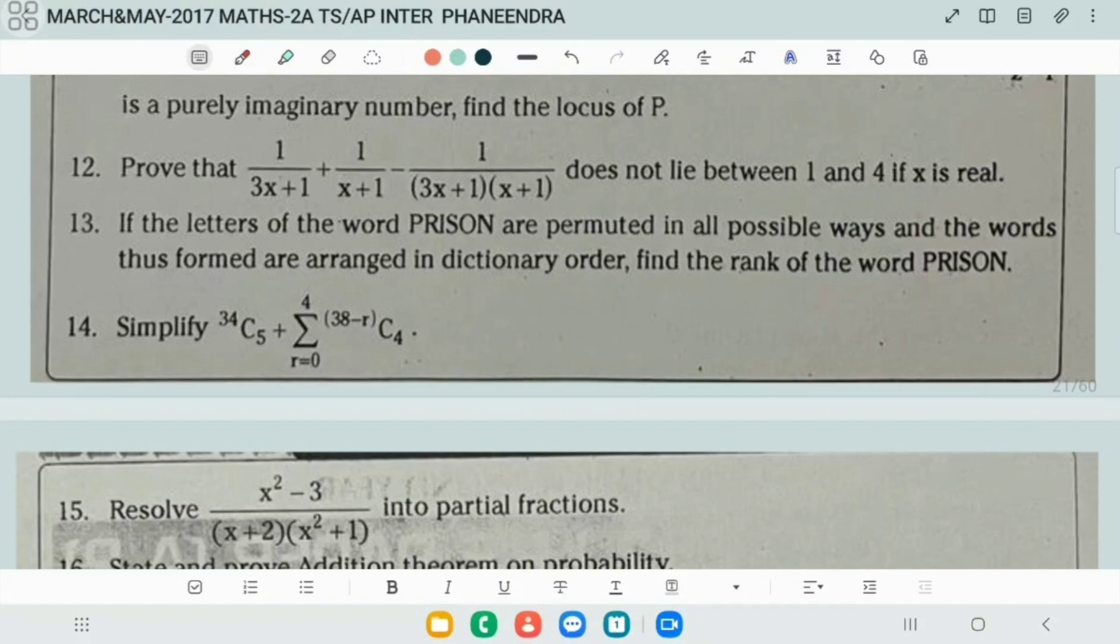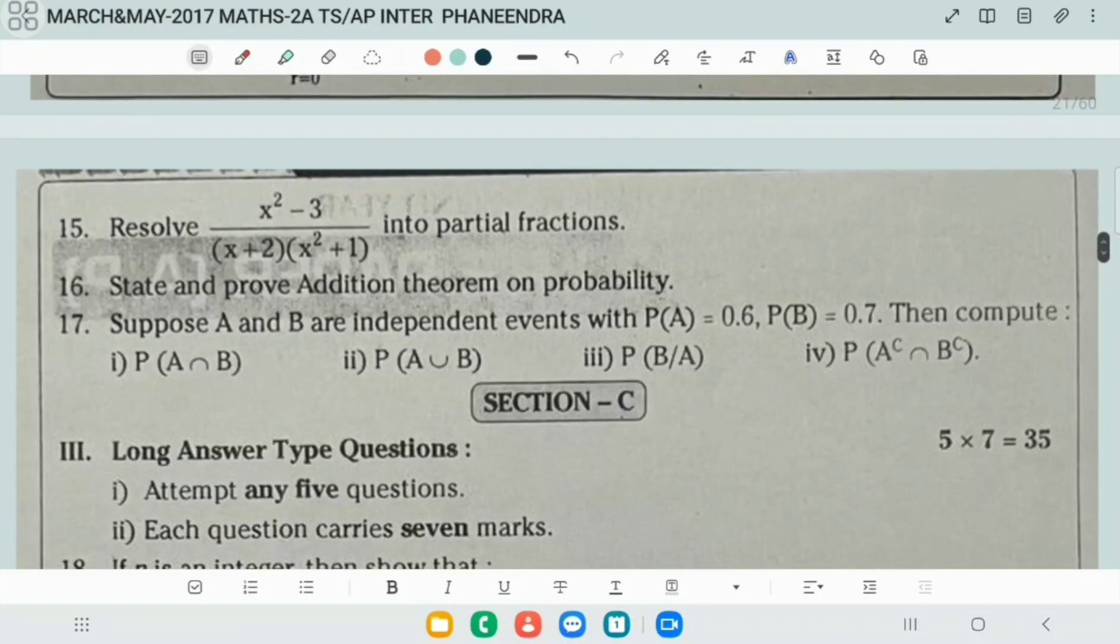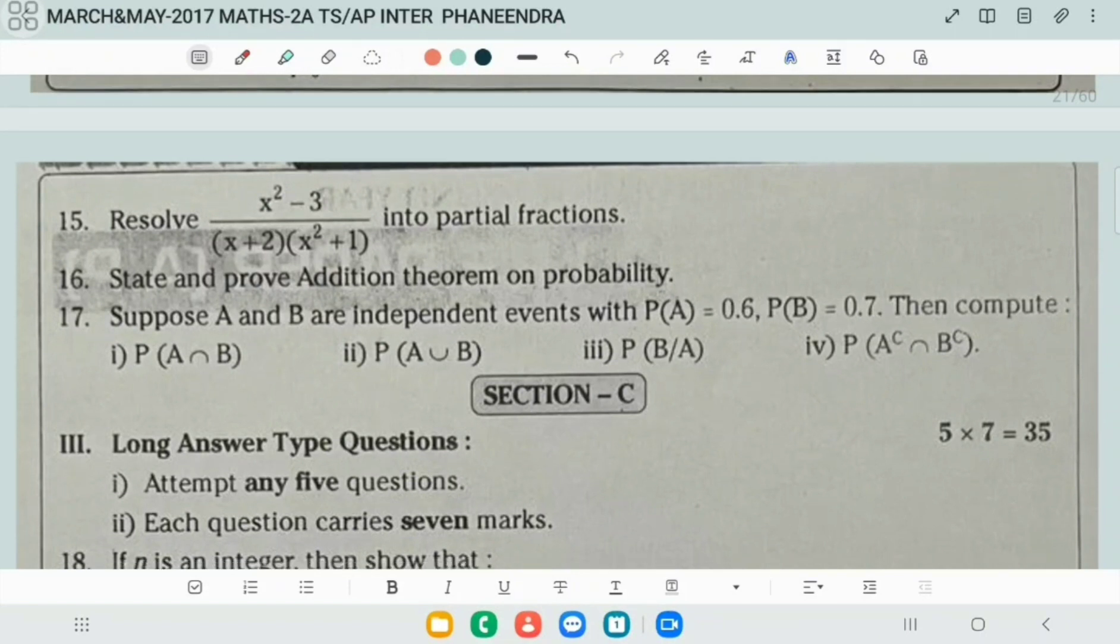Next, find the rank of the present word. 14, that is repeated in T. This is also 34C5 plus sigma r equal to 0 to 4, 38 minus r C4. Next, partial fraction question, resolve into fractions and prove addition theorem on probability.